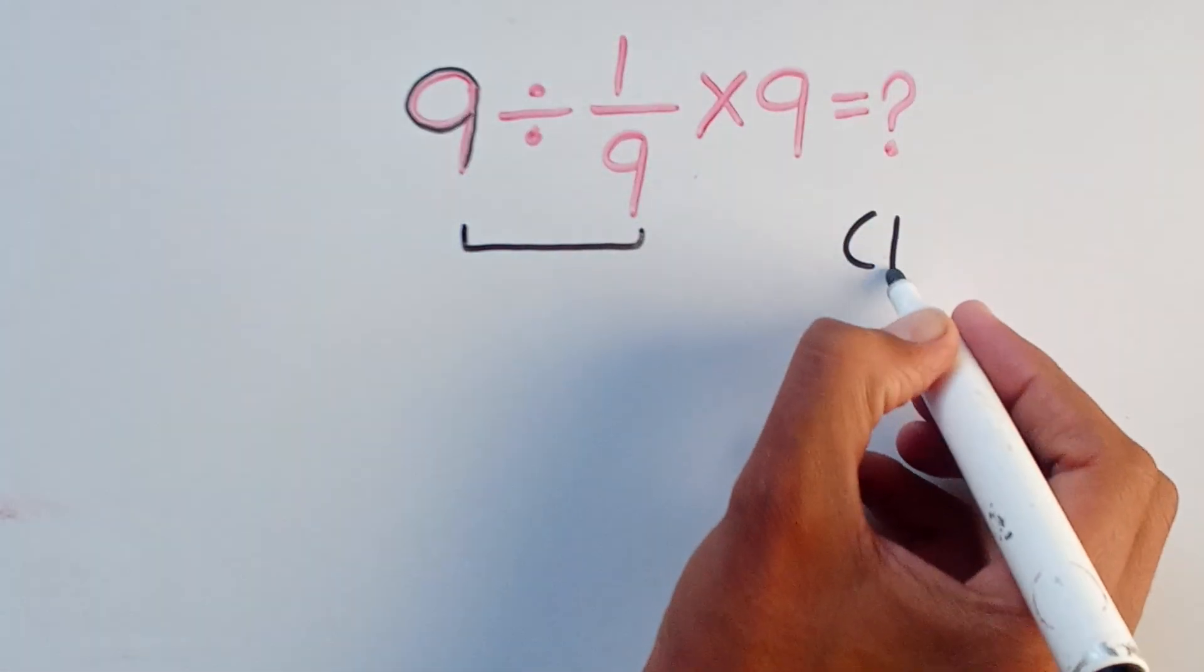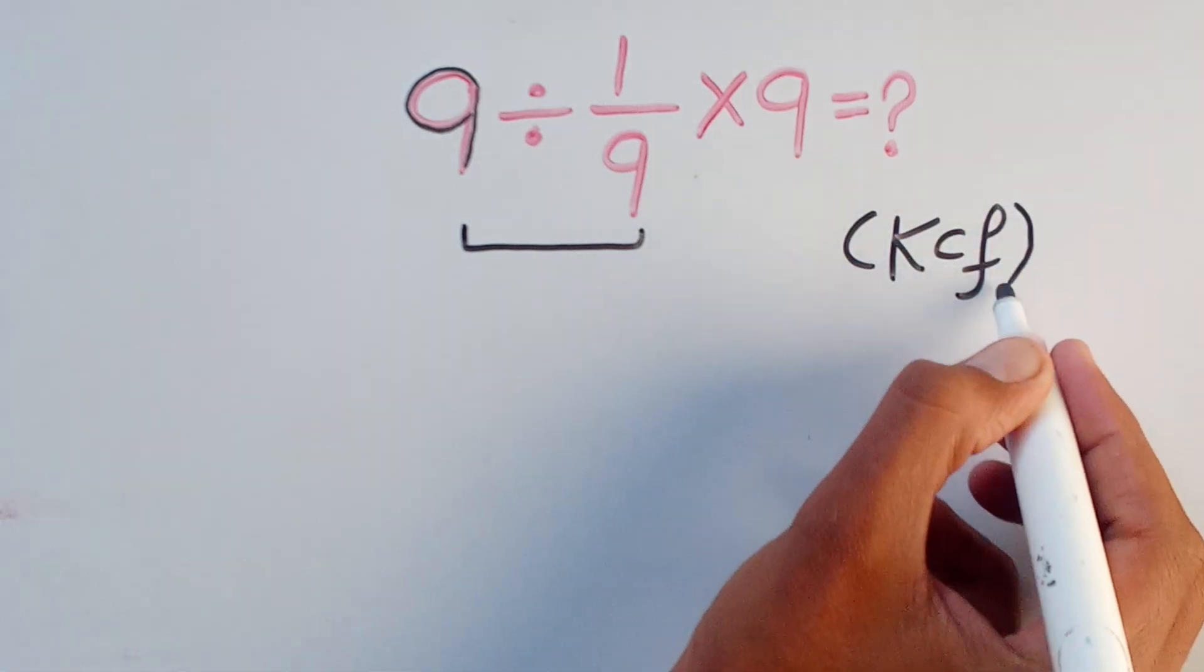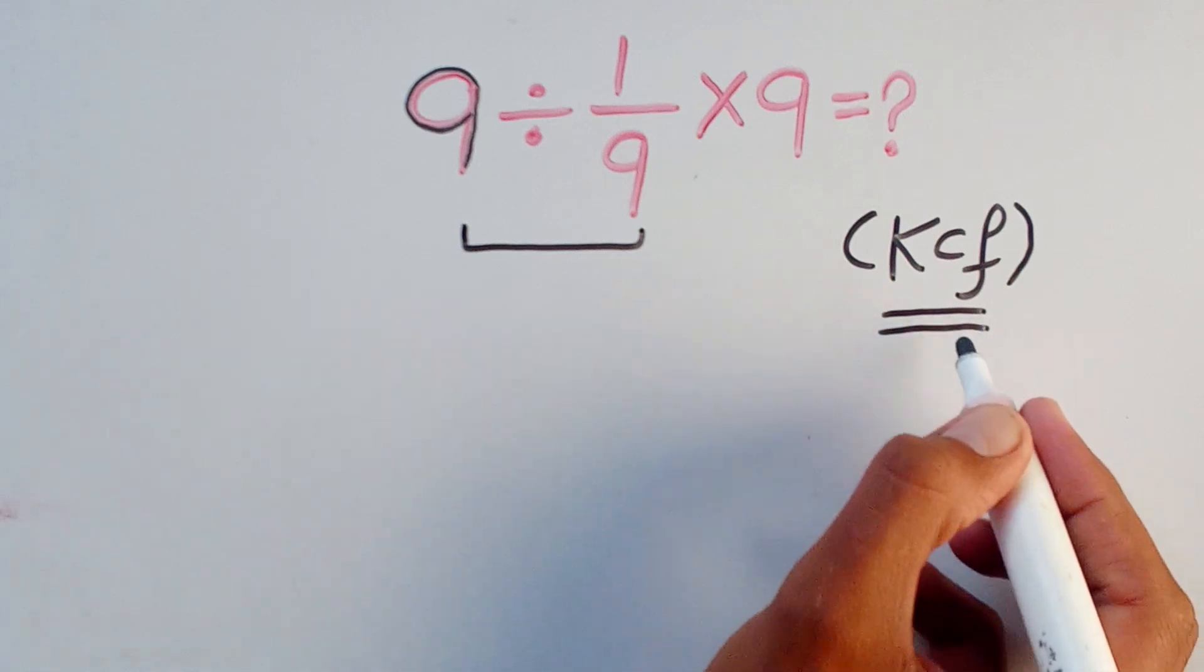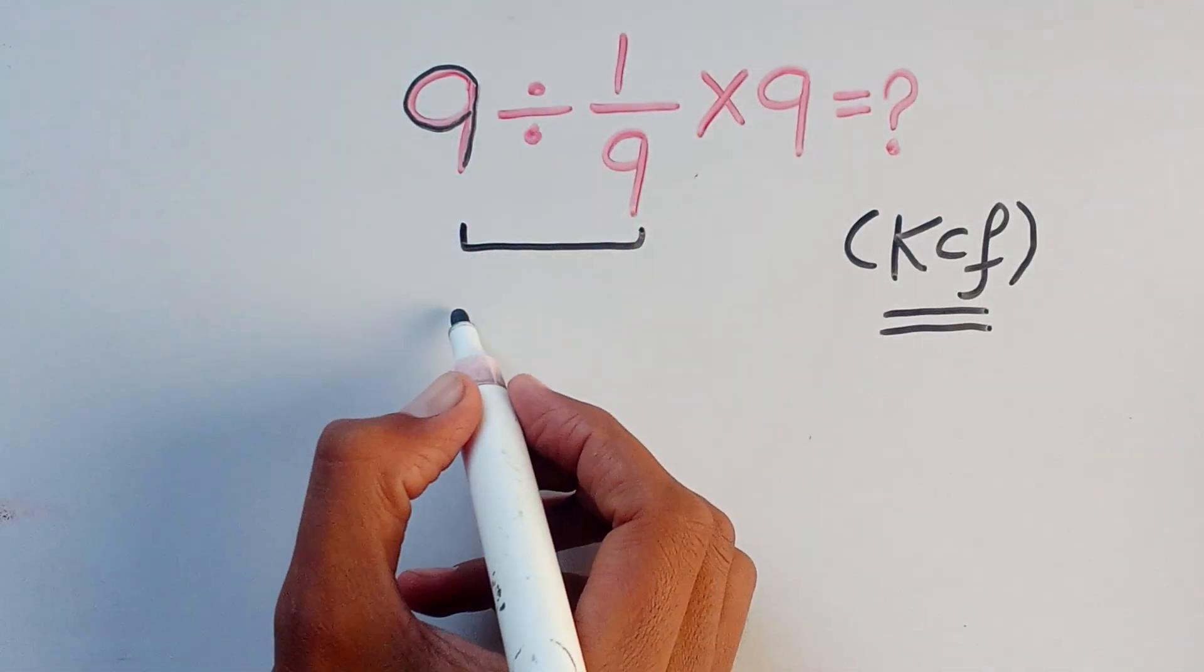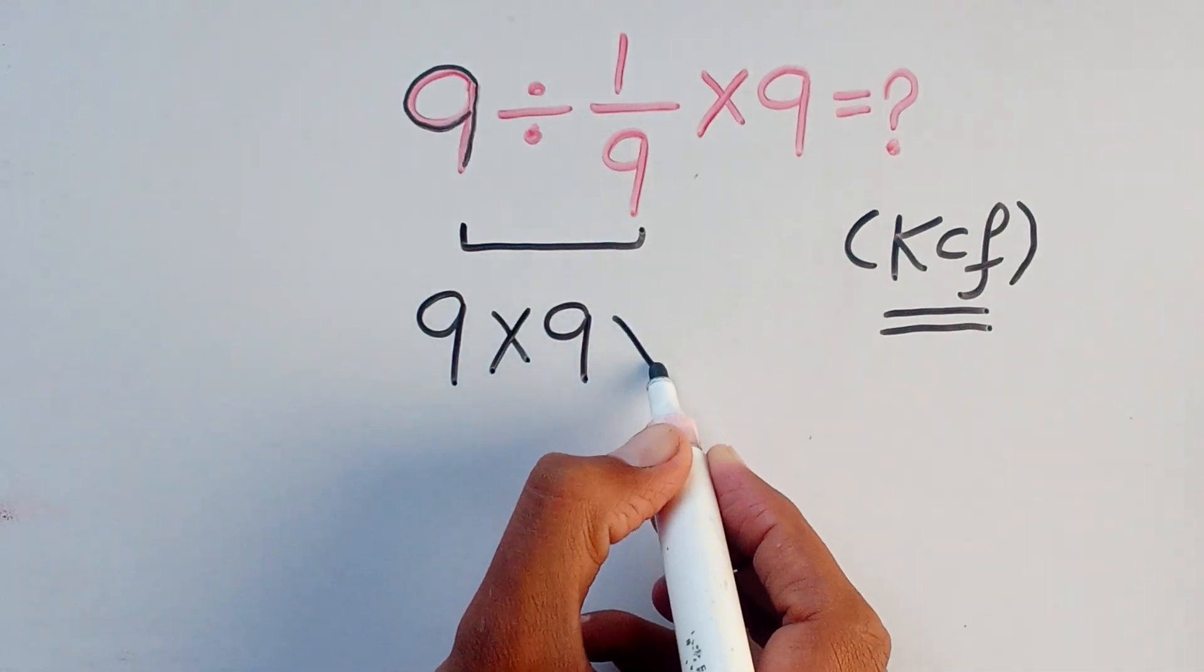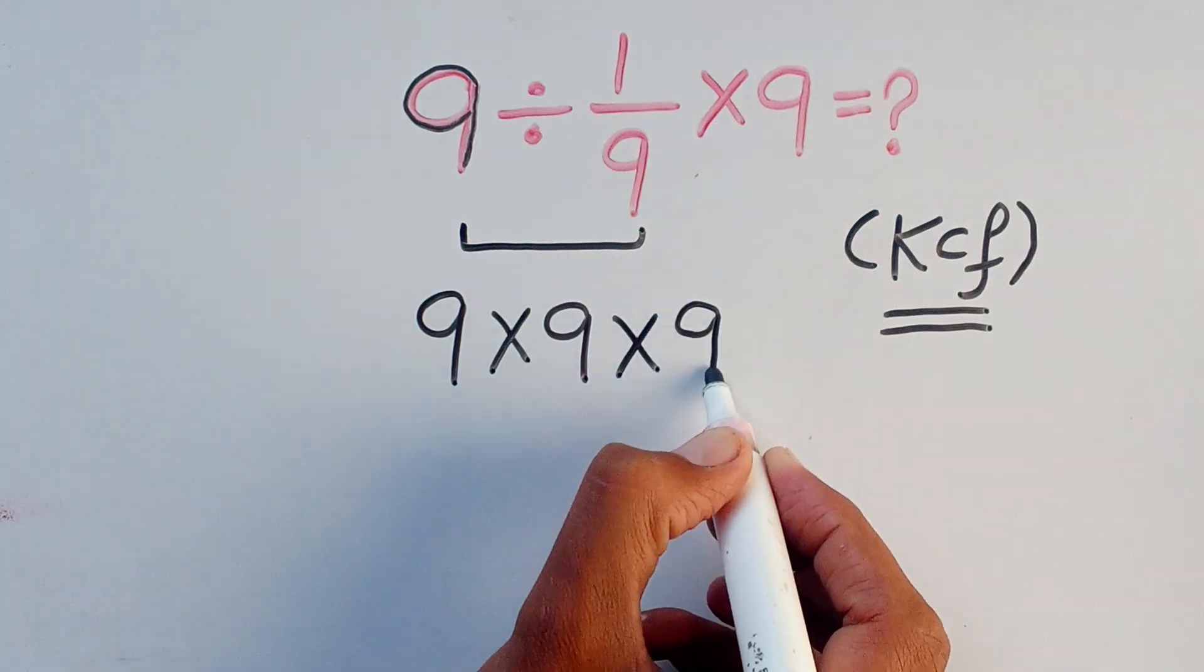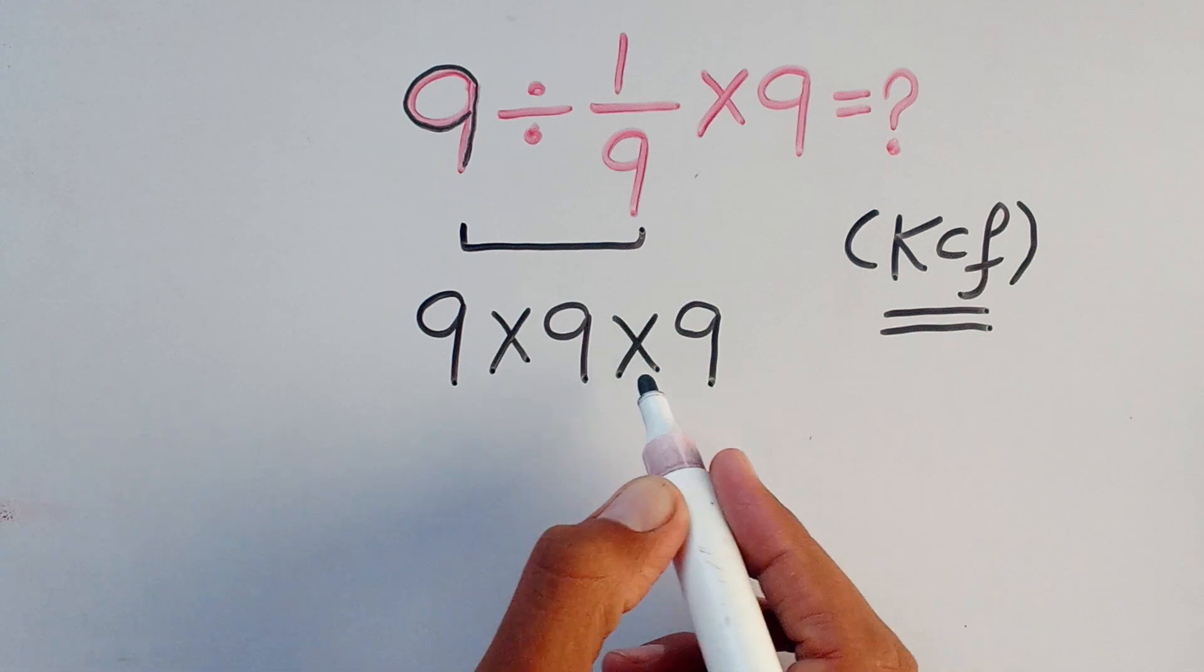We follow the rule of KCF which stands for keep, change, flip. According to KCF rule, when we change division to multiplication, then nominator is changed to denominator and denominator is changed to nominator and we can write the given question as.